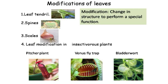Scales are leaves that are flat like plates but store food. In an onion, the inner leaves are very juicy because they store food and glucose. In ginger, the scales are thin and protect the inner part. So scales are flat structures that store food and protect the inner part of the plant.